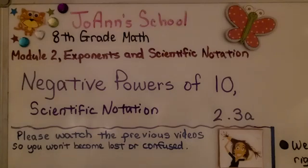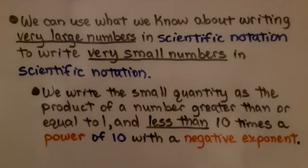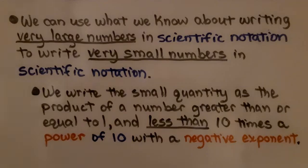Lesson 2.3a: negative powers of 10 and scientific notation. We can use what we know about writing very large numbers in scientific notation to write very small numbers in scientific notation. We write the small quantity as the product of a number greater than or equal to 1 and less than 10, times a power of 10 with a negative exponent.